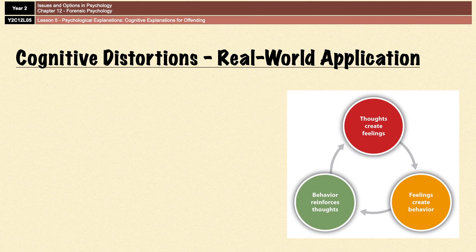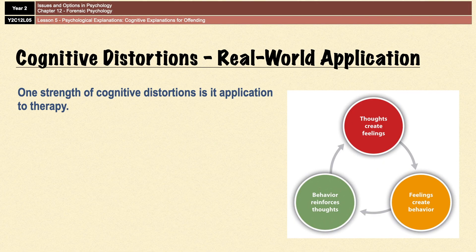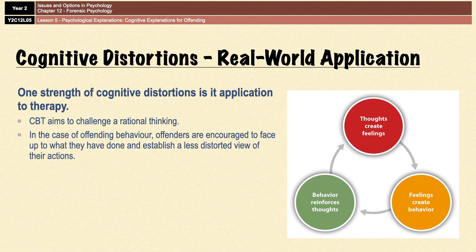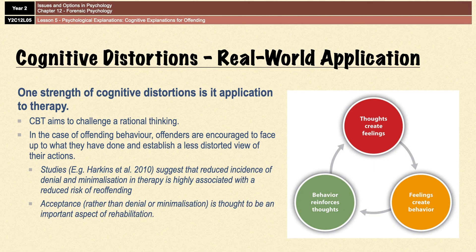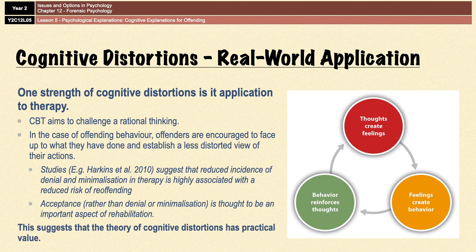There is also a strength for cognitive distortions: it has very good real-world application in therapies — for example, CBT, the cognitive therapy of choice. CBT aims to challenge irrational thinking, and in the case of offending behavior, offenders are encouraged to face up to what they've done and establish a less distorted view of their actions. Studies have consistently suggested that a reduced incidence of denial and minimalization in therapy is highly associated with a reduced risk of re-offending. Acceptance is thought to be a really important aspect of rehabilitation, because accepting it means you're not distorting reality to avoid dealing with it. This suggests that the theory of cognitive distortions has practical value in rehabilitation and therapy for offenders.